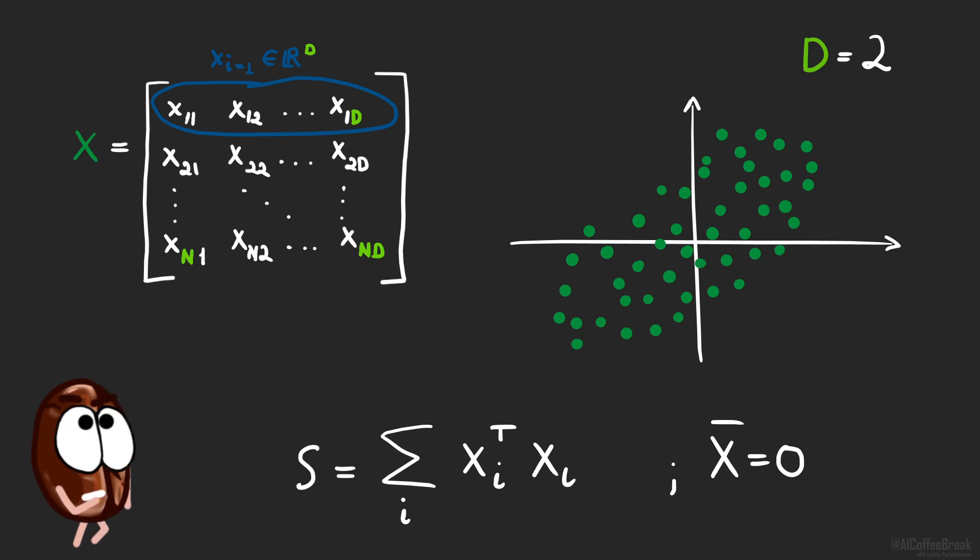But what is this thing, the scatter matrix? We remember that our data x is composed of rows of d dimensional vectors. If we take one of these rows, transpose it, and do the multiplication, we get a d by d matrix. And of course, we sum this all over our data samples i. Why have we done this?